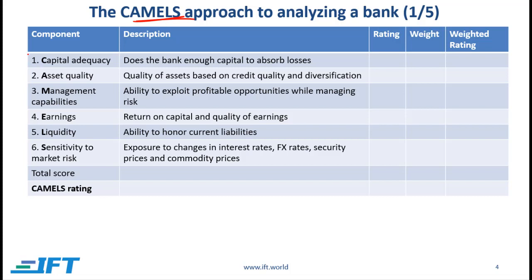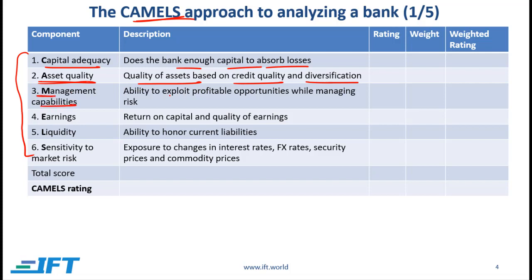The CAMELS approach has six components. C stands for capital adequacy, which deals with whether a bank has enough capital to absorb losses. A stands for asset quality, which is based on the credit quality of the assets as well as how well the assets are diversified. M stands for management capabilities, which has to do with management's ability to exploit profitable opportunities while managing risk.